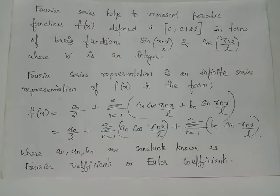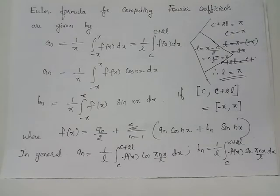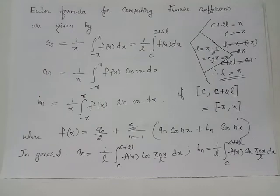We have Euler's formula which helps us compute the Fourier coefficients. We have a₀ equals 1/l times the integral from c to c+2l of f(x) dx. We have considered f(x) defined for the closed interval [c, c+2l], and the length of this interval is 2l.